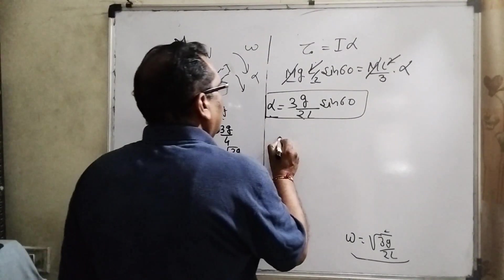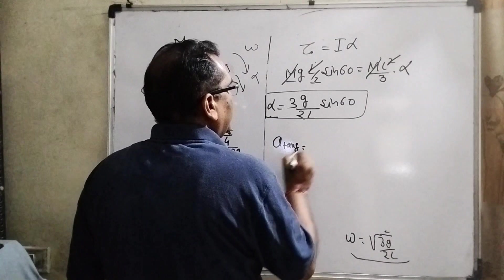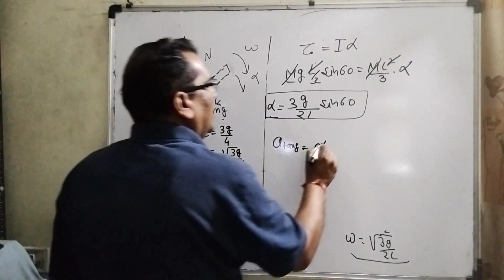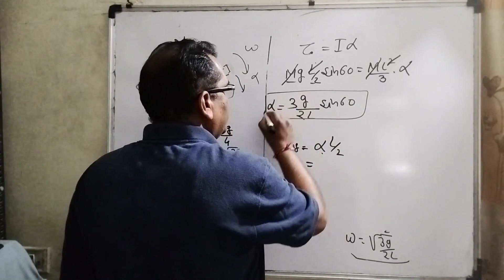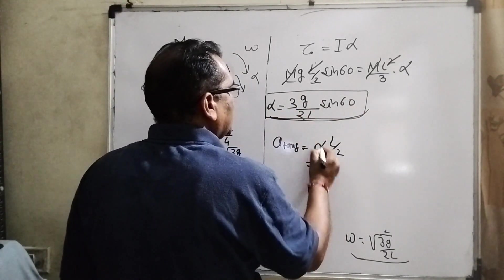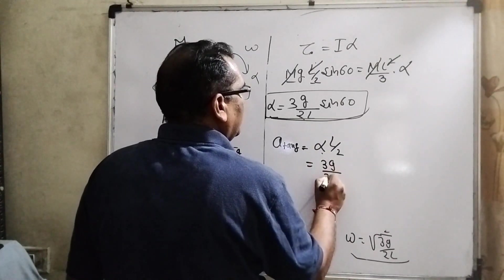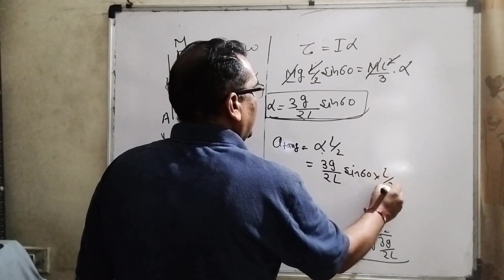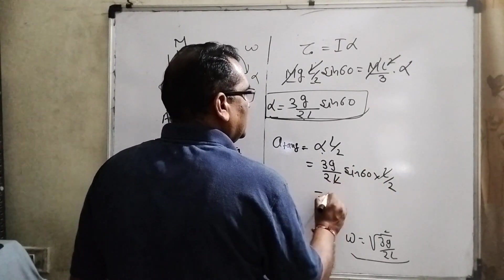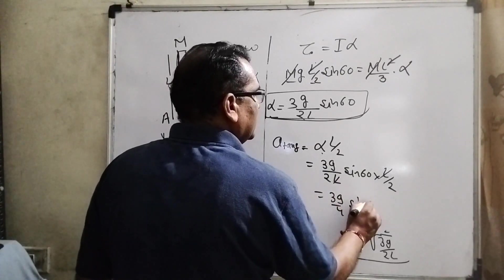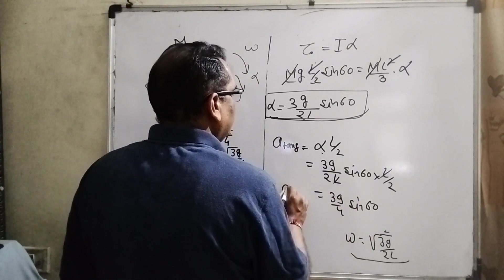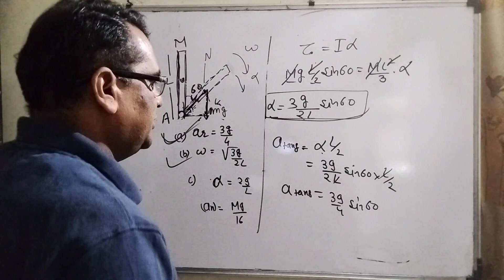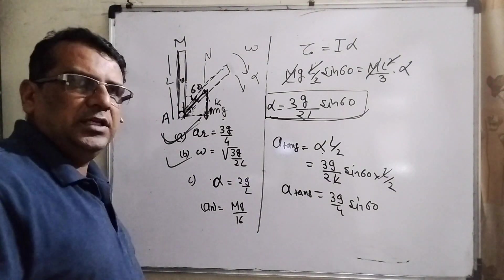Now further, tangential acceleration can be written as alpha into distance. What is the distance? L by 2. Then alpha, as we have found out, this is the alpha. Substitute this value: 3g by 2L sin 60 into L by 2. This L cancel out. 3g by 4 sin 60. This is the tangential.